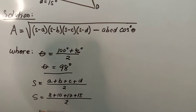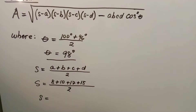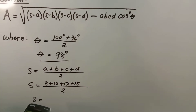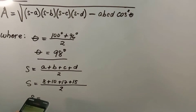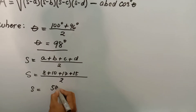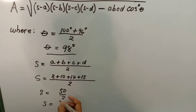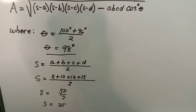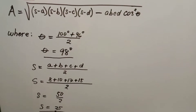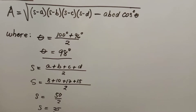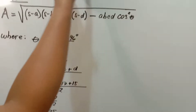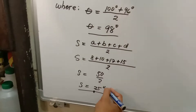So s = (8 + 10 + 17 + 15) / 2 = 50 / 2 = 25. Therefore s is equal to 25 inches, since our units are in inches.